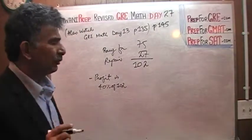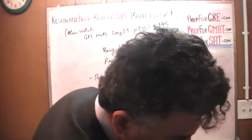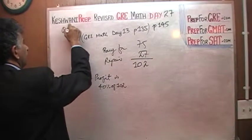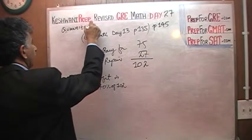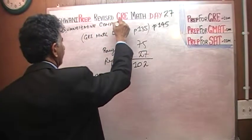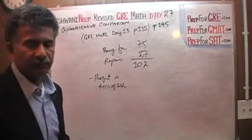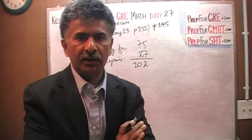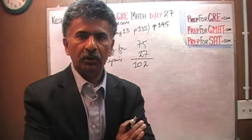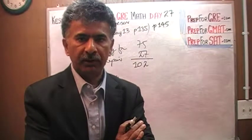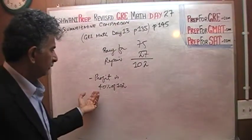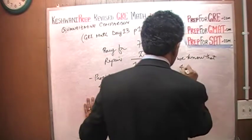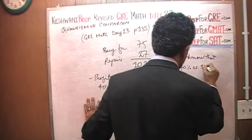This is where understanding the concept of quantitative comparison comes in. The reason these questions are called quantitative comparison is because you're given two quantities in two columns and asked to simply compare them. Nobody is asking you to compute anything precisely. We know that 40% of 100 is 40.